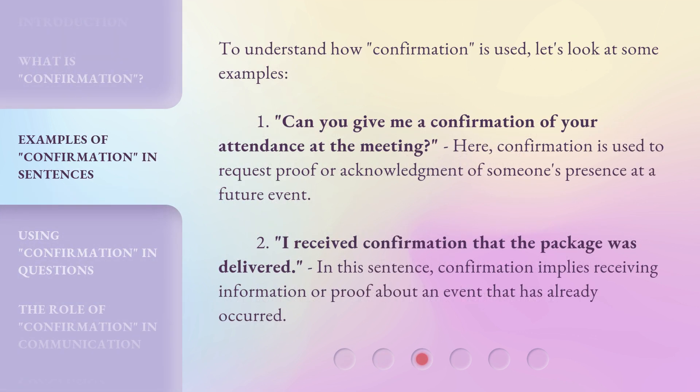To understand how confirmation is used, let's look at some examples. Can you give me a confirmation of your attendance at the meeting? Here, confirmation is used to request proof or acknowledgement of someone's presence at a future event. I received confirmation that the package was delivered. In this sentence, confirmation implies receiving information or proof about an event that has already occurred.